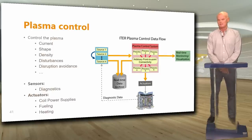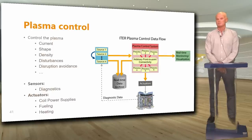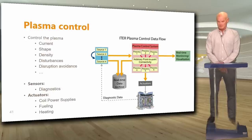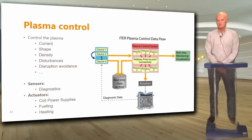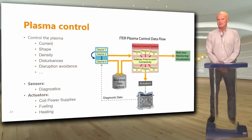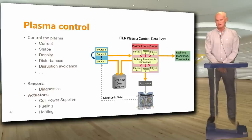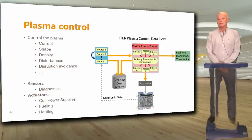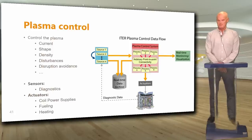The ultimate feedback control is the plasma control system, controlling plasma current, shape, density and so on, where the sensors are diagnostics and the actuators are the coil power supply, fueling and heating. This is a very complex multiple-input multiple-output system where you combine and split data. It's a big topic with a dedicated ITER talk; the key point here is that plasma control is implemented as part of the integrated control system.